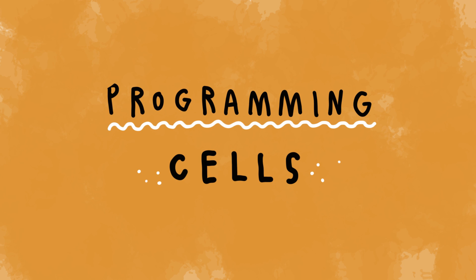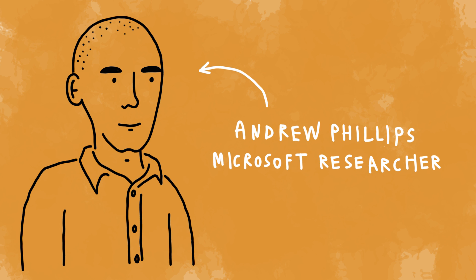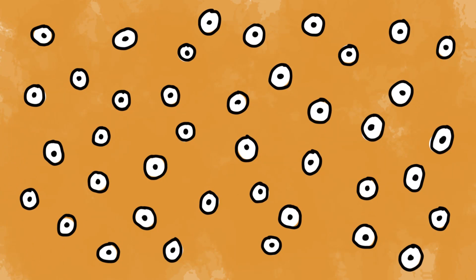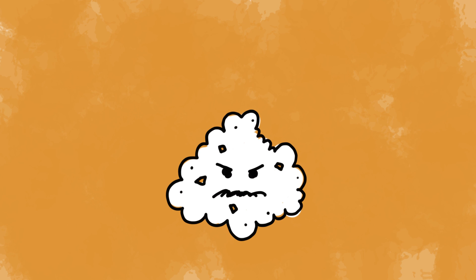Programming cells. Andrew Phillips and his team at Microsoft are working on ways to understand how cells make decisions, like those that trigger cancerous growth, which could ultimately help create smarter drugs.